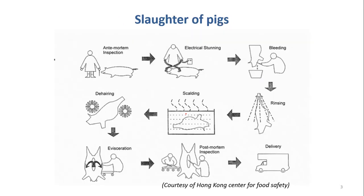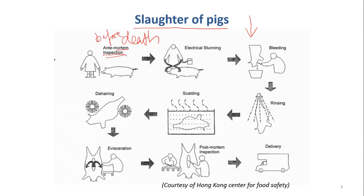This is an illustration of how pigs are slaughtered. The first step is ante-mortem inspection. 'Mortem' means death, and 'ante' means before. So this is the inspection of the animal before death, before slaughtering.